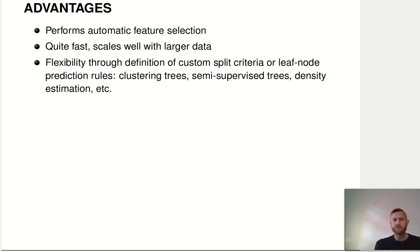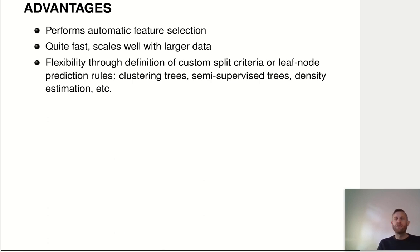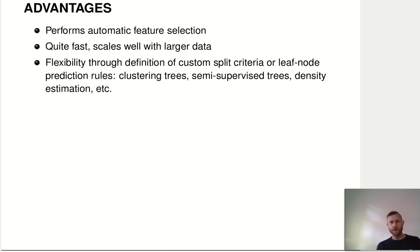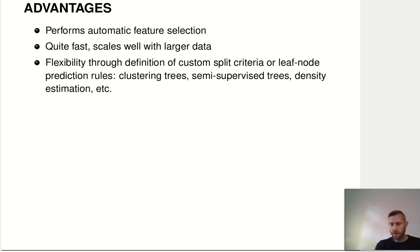Finally, trees are a very flexible method because you can define custom split criteria — basically any loss function you want can be used as the split criterion. Any rule you want for generating a prediction in a leaf can also be customized. This means trees have been extended to many different settings: trees for clustering in unsupervised problems, semi-supervised trees where target values are only available for part of the data, trees that do density estimation where the prediction is an entire density rather than a point value, and many other interesting extensions beyond simple regression and classification.